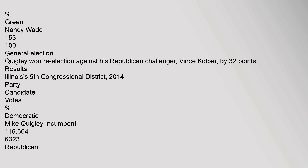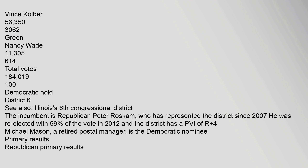Democratic primary: Mike Quigley – 26,364 votes, 100%. Republican primary: Frederick White – 21,100 votes. Green primary: Nancy Wade – 153 votes, 100%. General election: Quigley won re-election against his Republican challenger Vince Kolber by 32 points. Results: Mike Quigley (D) 116,364; Vince Kolber (R) 56,353; Nancy Wade (G) 11,305; Total votes 184,019. Democratic hold.